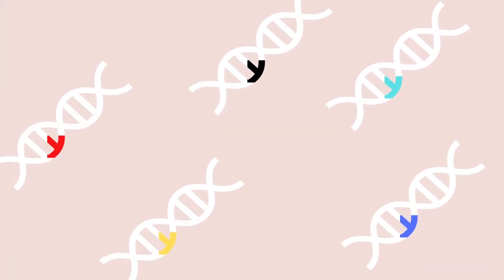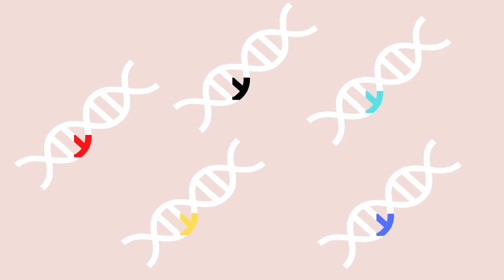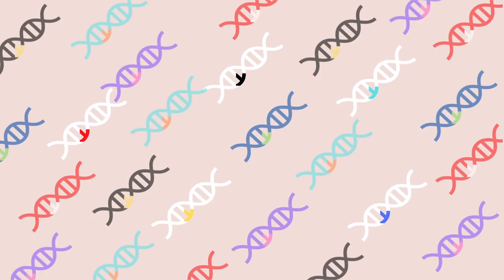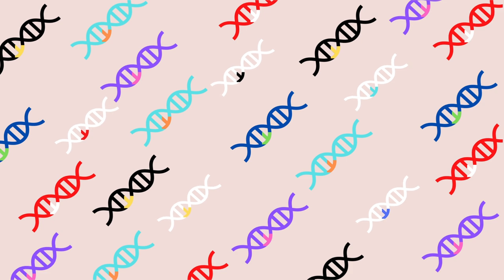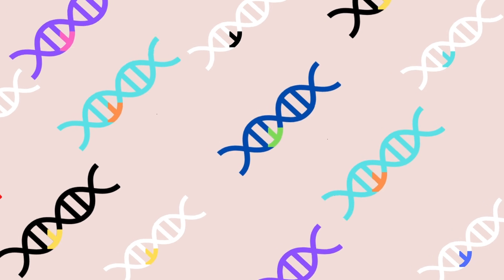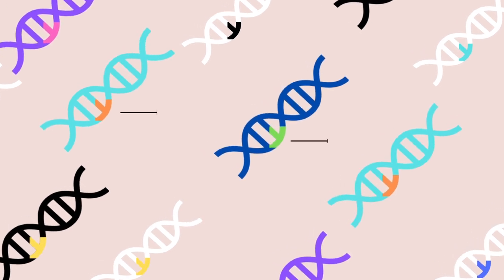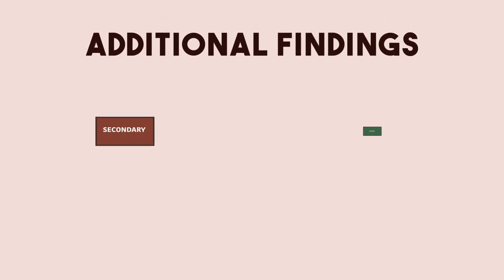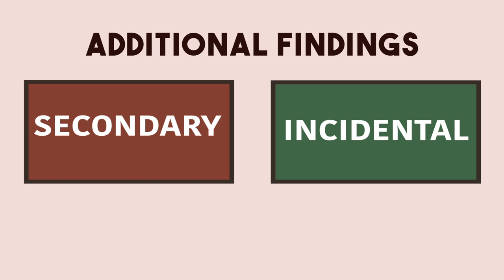Although only variants in a handful of genes are relevant to the reason for testing, whole genome sequencing provides scientists with all the millions of variants present throughout our genome. Some of these variants could tell us valuable information about ourselves that may be unrelated to the primary reason for testing. This additional information is broken down into two types: secondary and incidental findings. As a recipient of this genetic test, you can decide what information you would like to know.